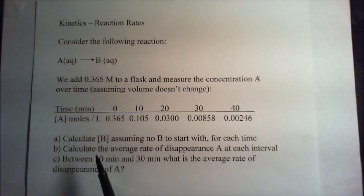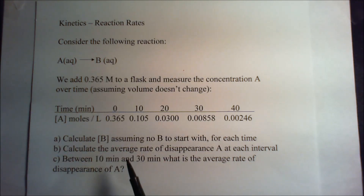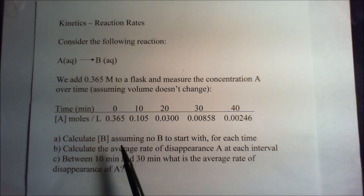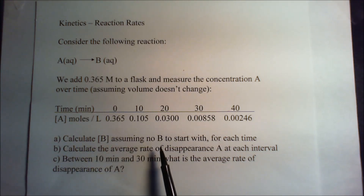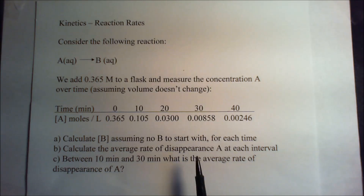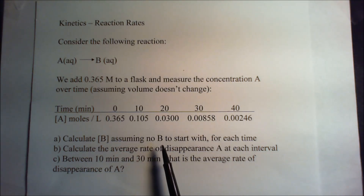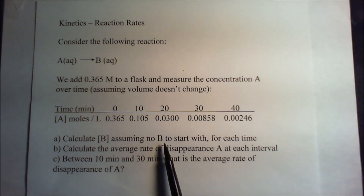The first thing we want to do is ask: what happens to the concentration of B? We're going to calculate B, assuming no B to start with for each time. Now, if we didn't assume there was no B to start with, we would just add that in.